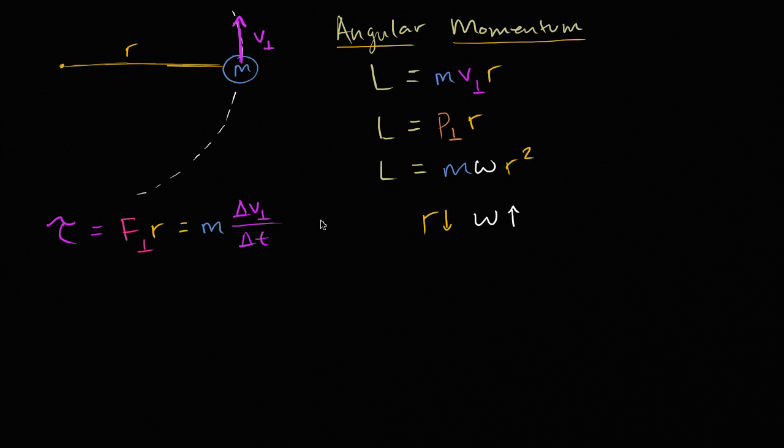And then, of course, we have times r. Times r. Now if we multiply both sides of this times Δt, we get, and actually let me do τ in a different color. We do torque in green.